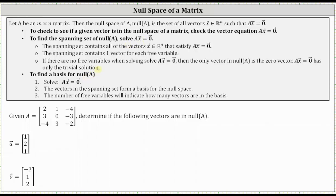Let A be an m by n matrix. Then the null space of A is the set of all vectors x in R^n such that matrix A times vector x equals the zero vector. This means to check if a given vector is in the null space of a matrix, we check the vector equation A times vector x equals zero, where vector x would be the given vector.